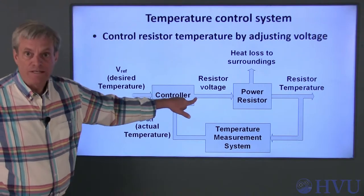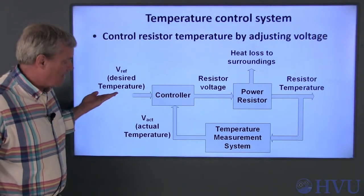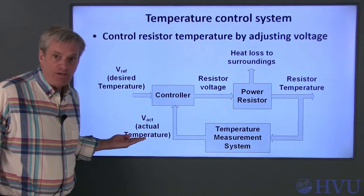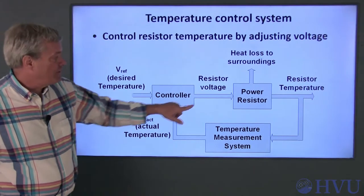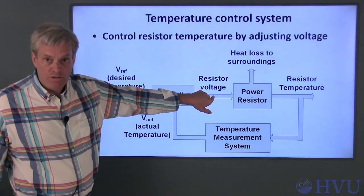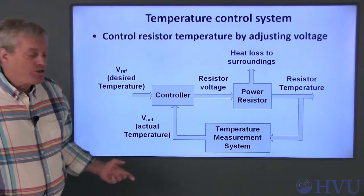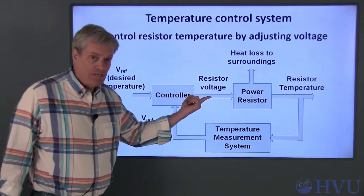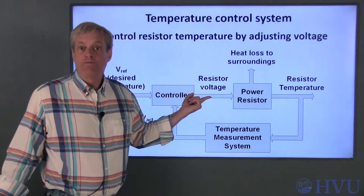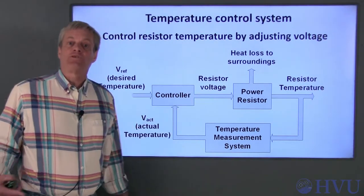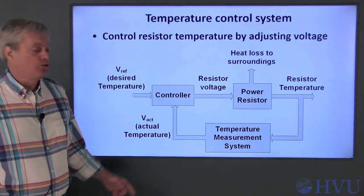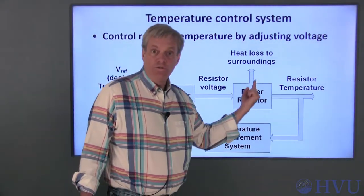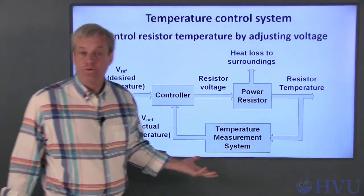The controller will accept the voltage representing the desired temperature and the voltage representing the actual temperature. Its output is a voltage to the resistor. If the actual temperature is too low, the controller increases the voltage to the resistor and the resistor heats up. If the actual temperature is too high, the voltage to the resistor is reduced, and the resistor loses heat to its surroundings and cools off.